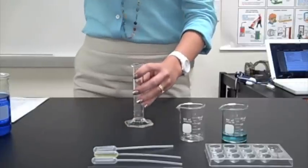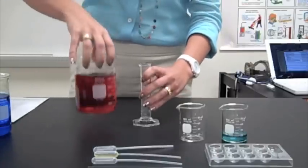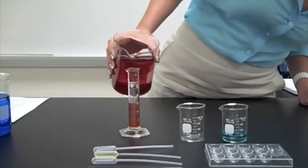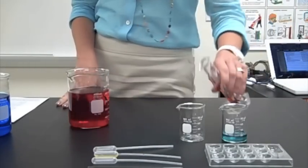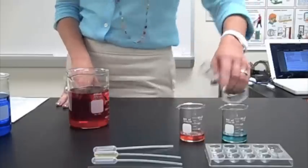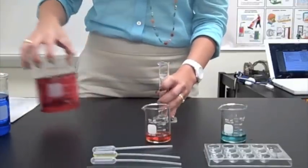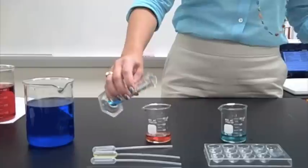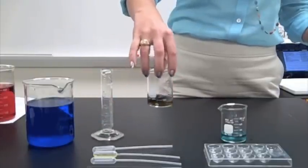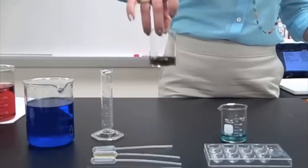Rinse it out again, which is what I just did, and 16 mils of the red solution. Here's our red solution. I'm going to get 16 milliliters. Pour it into the beaker. And now we've got to rinse our graduated cylinder again. Next step says, 4 milliliters of the blue solution. Add that to the red. Swirl it around to see what you get.